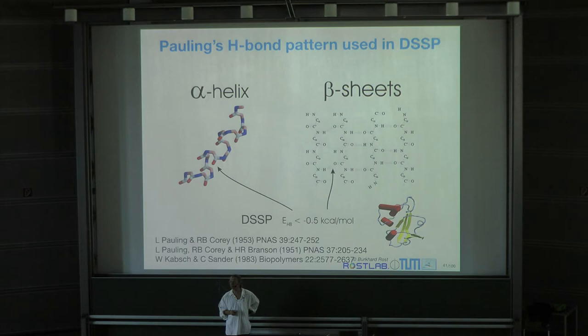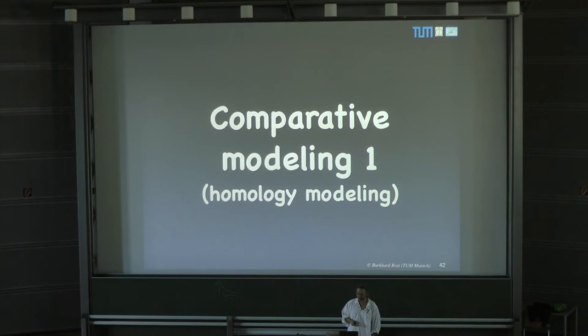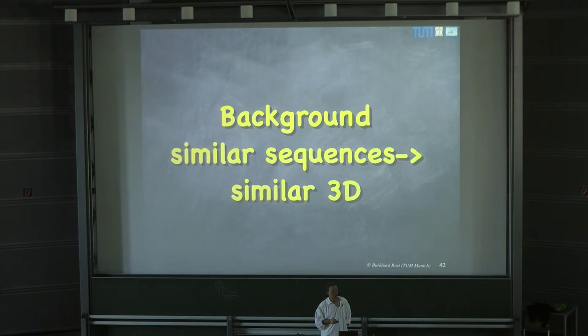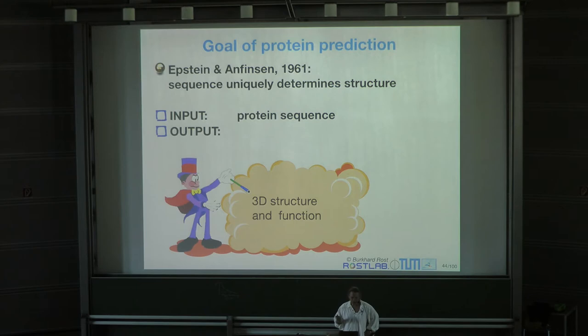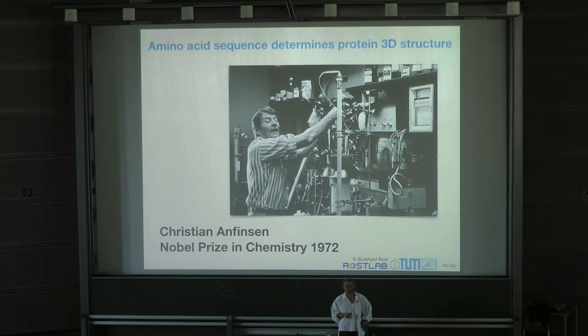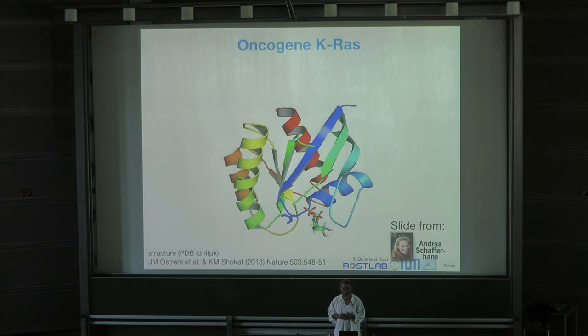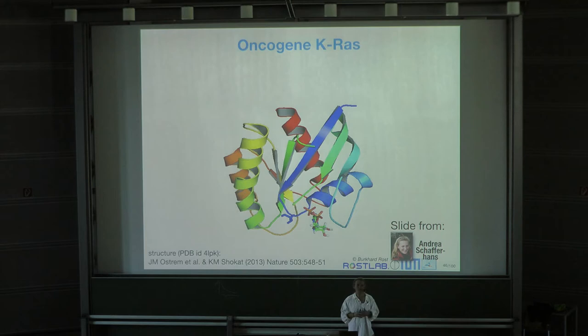Moving into comparative modeling. Similar sequences have similar 3D structures. The goal of structure prediction is to predict 3D structure from sequence input. KRAS is the first oncogene identified — the first protein associated with cancer in the 1970s and 80s. Shown here is an overlay of the native KRAS structure and a mutant where glycine at position 12 is changed to cysteine — a mutation that causes cancer. The structural difference is very subtle, mainly at binding site loops.